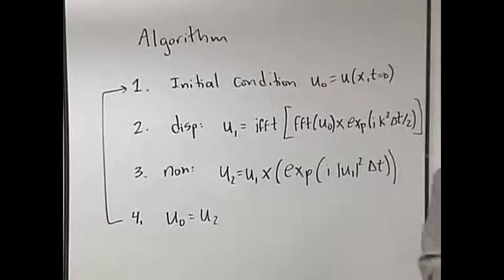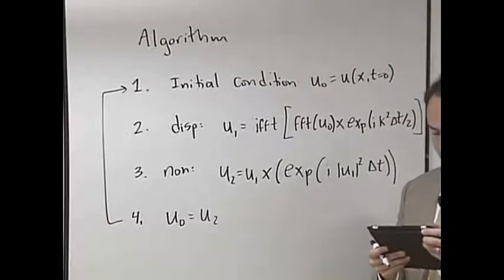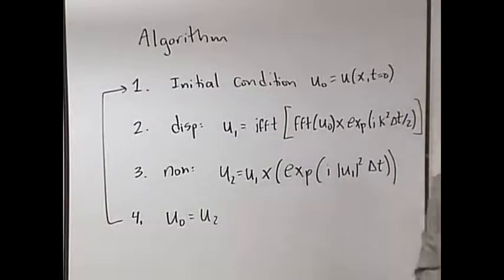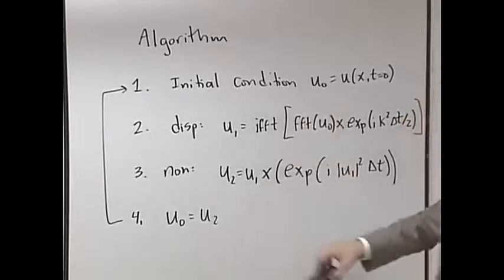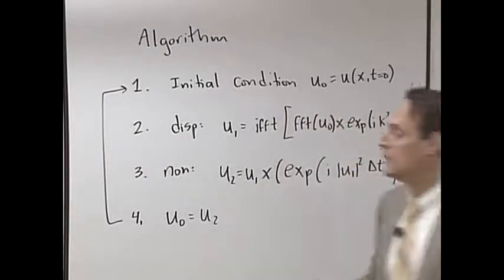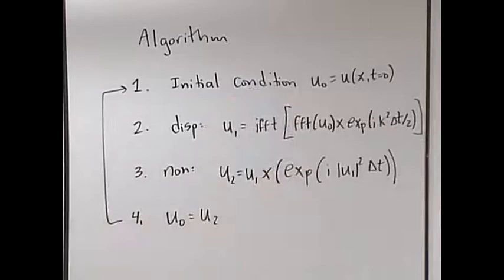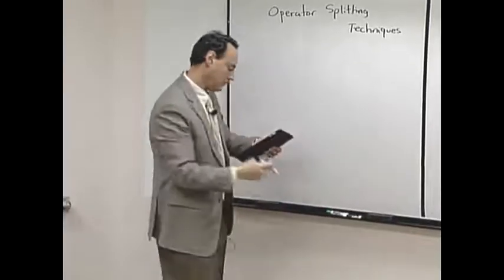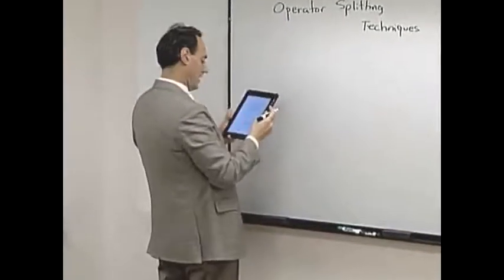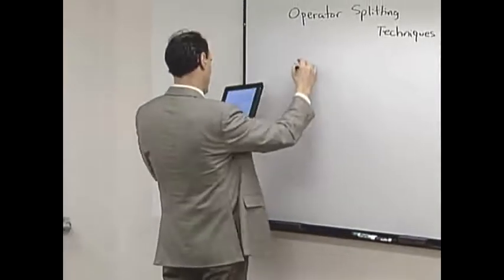Now question arises, how good is this? What's the error you do in doing this? Because it's a pretty nice little algorithm. The error now is going to be associated with your Delta T, so let's consider the basic scenario.